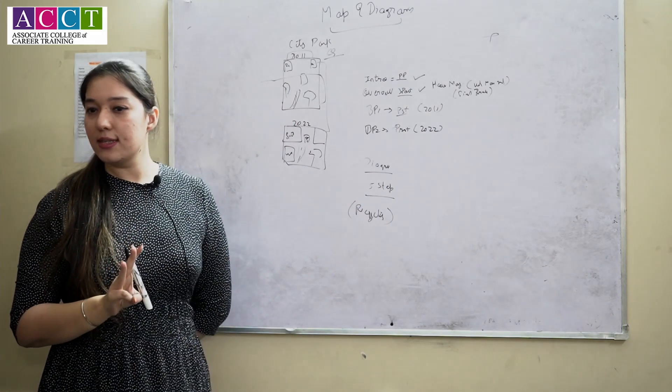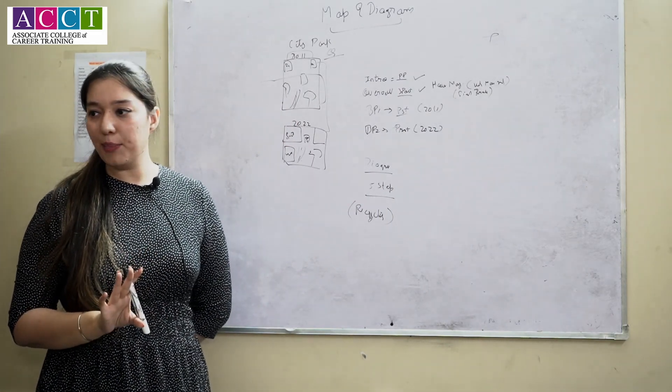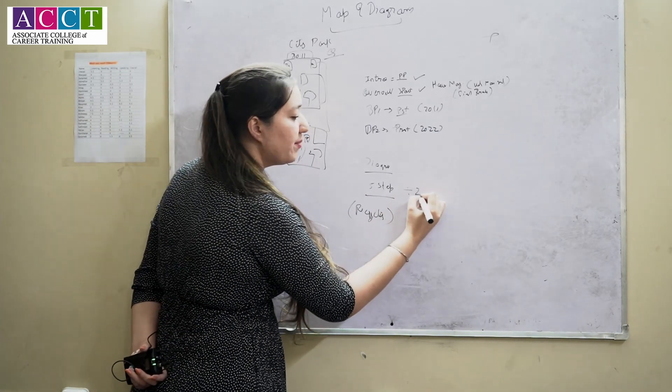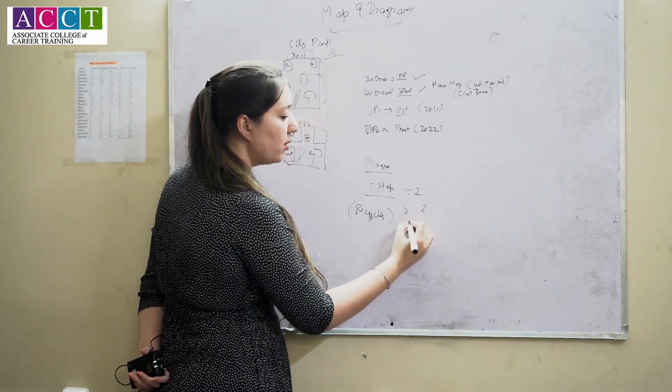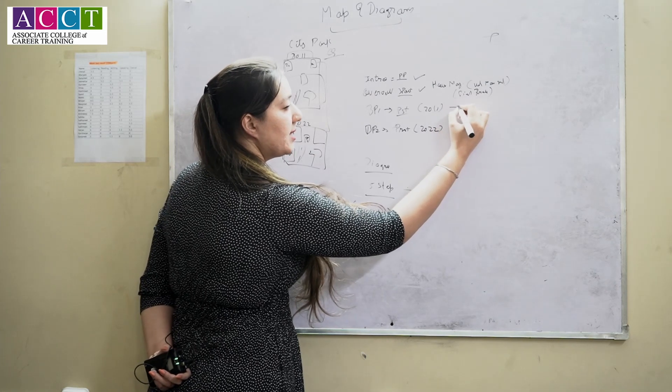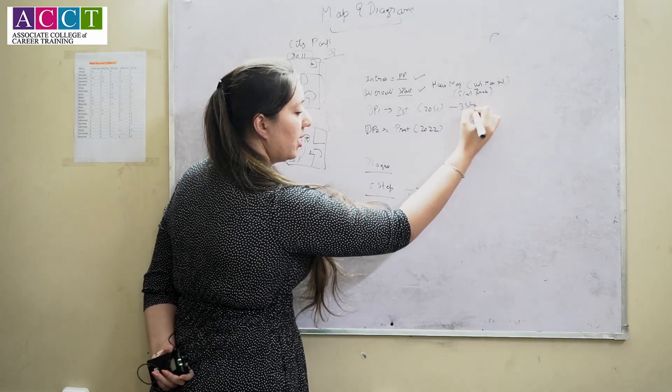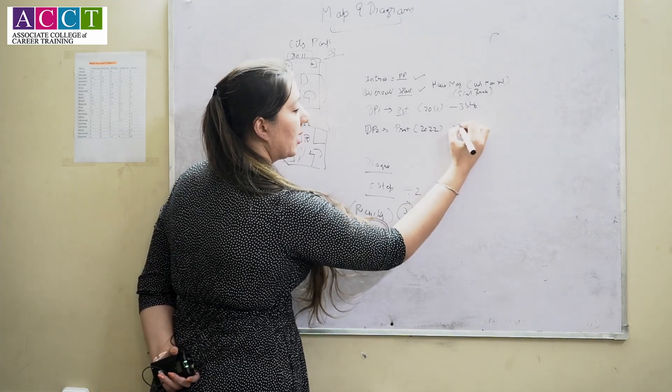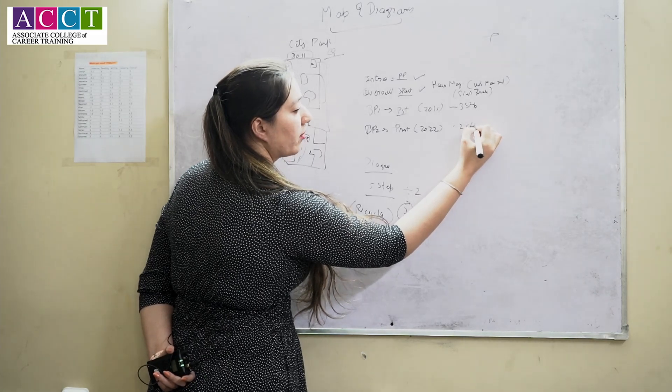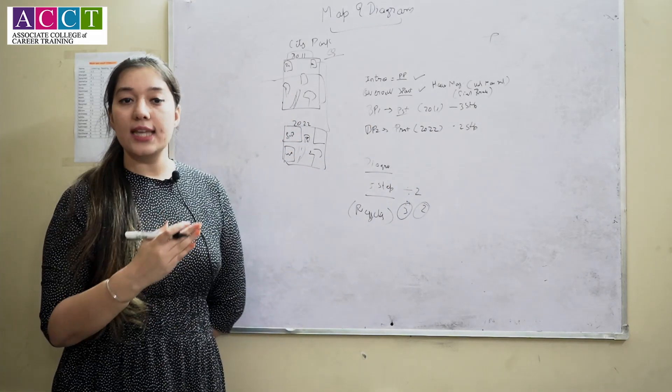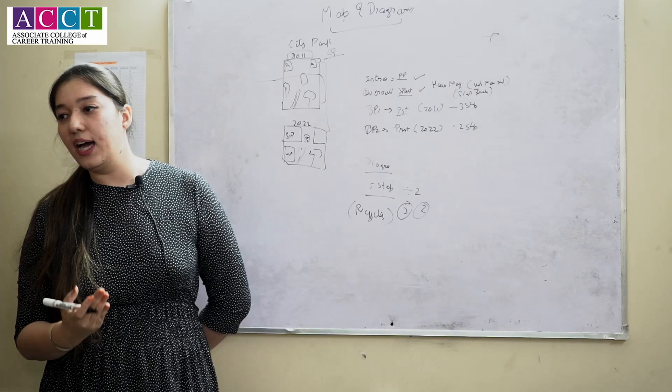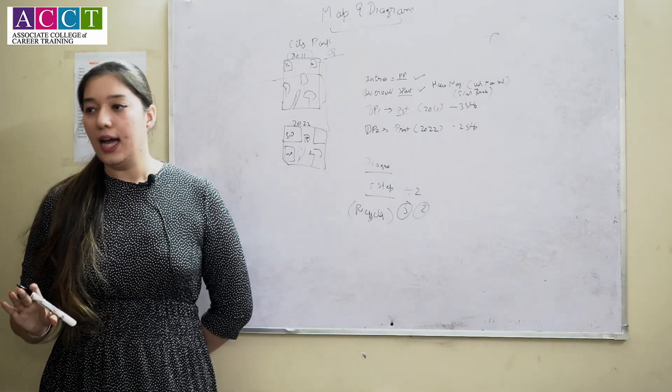After that you have to divide the steps into two, so there will be three and two. Explain all these three steps in body paragraph one and rest two in body paragraph two, like how it is started, what it is doing, and how we have to write it. Understood by everyone?